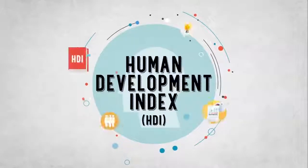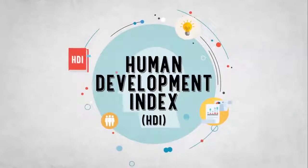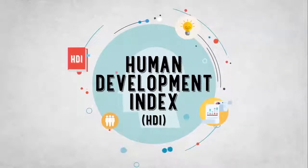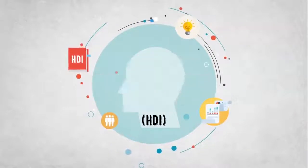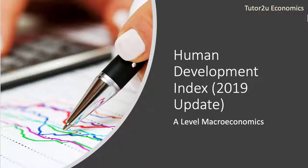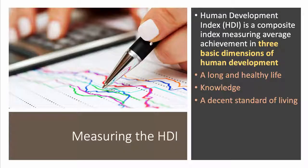The 2010 Human Development Report introduced an Inequality-Adjusted Human Development Index, IHDI. While the simple HDI remains useful, it had stated that the IHDI is the actual level of human development, accounting for inequality, and the HDI can be viewed as an index of potential human development, with a maximum IHDI that could be achieved if there were no inequality.